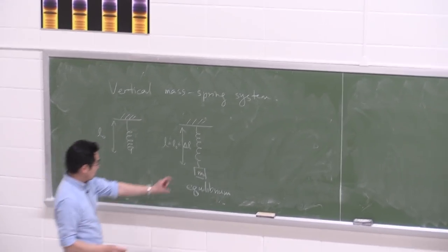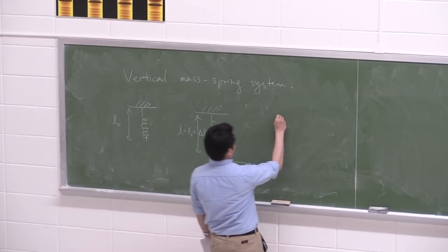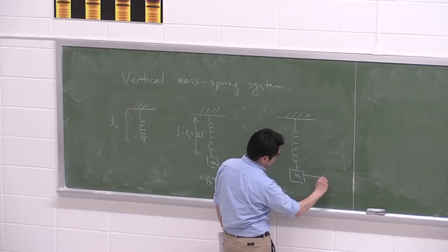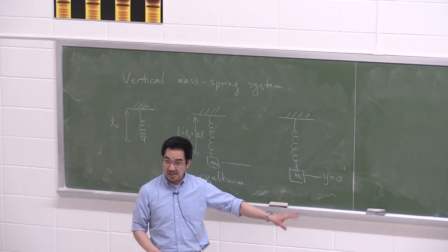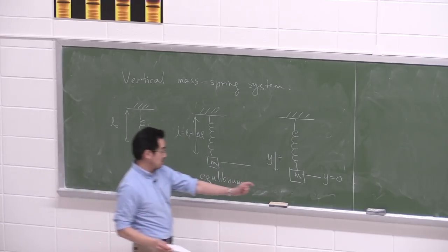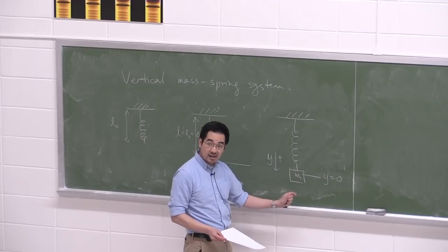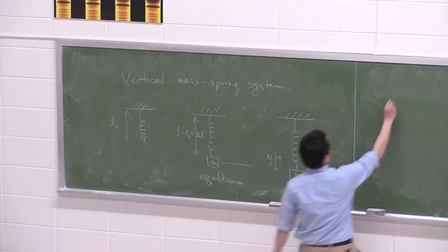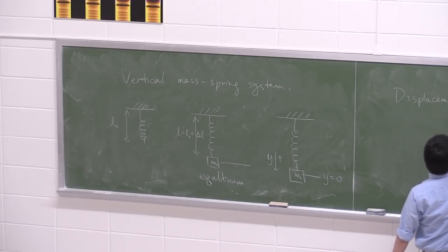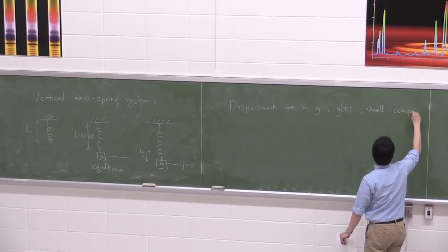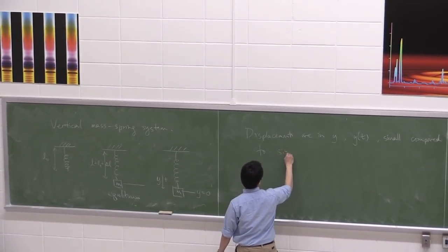On top of that, I'm going to do the exact same thing I did last class. From this equilibrium position, I'm going to state that this is y equals 0 — my new datum line. Perhaps I do positive y downwards. Then from this position, I disturb it a little: I pull it down and have it displace by a small amount in the y direction, which I call y as a function of time. The displacements are in the y direction, a function of time, and they're small — small compared to the length of the spring.